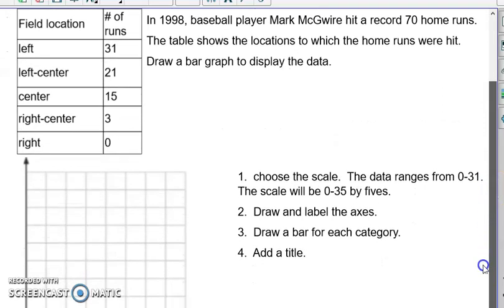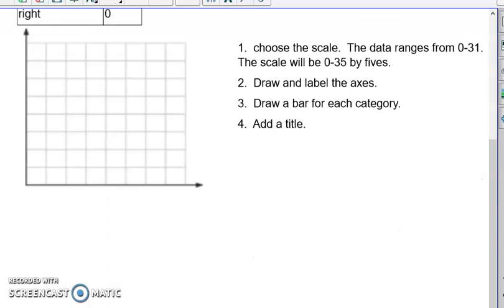The first thing we want to do is choose our scale. It looks like the smallest number we're dealing with is zero, our largest is 31. So I think my scale is going to be from zero to 35 by groups of five. The next thing we want to do is label our axes. We're going to consider the x-axis. We'll call that the location, perhaps.